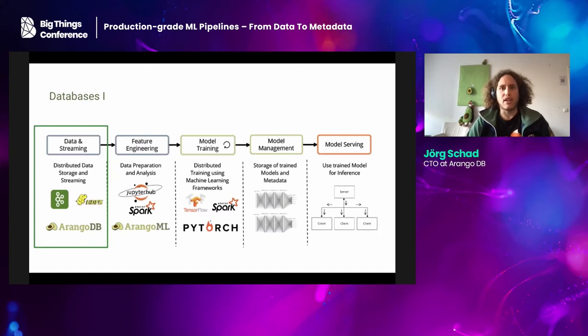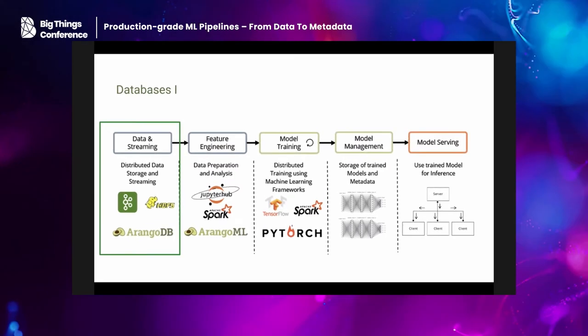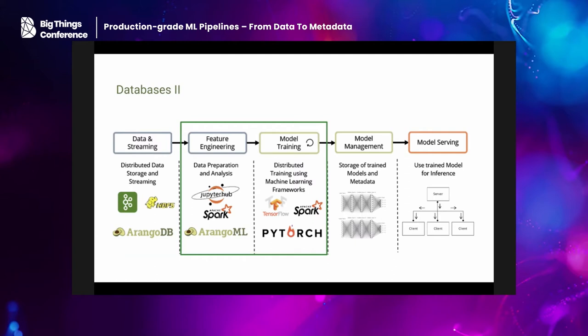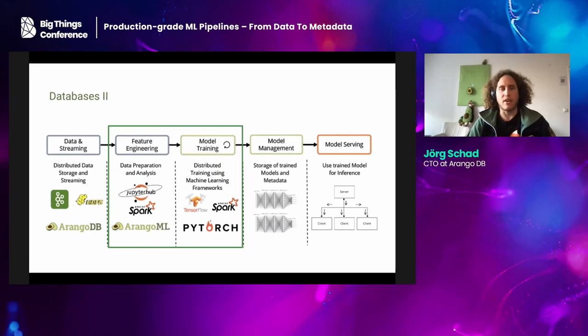Going through this pipeline, where can databases actually play a role? The obvious part is on the data side — we could load data from a database or store training and verification data there. Next is feature engineering and model training. Interestingly, graph databases are often used for analytics, and there we can already have unsupervised machine learning models like k-nearest neighbors, community detection, or other things where we don't really train a model but can extract features which can then be leveraged for model training.